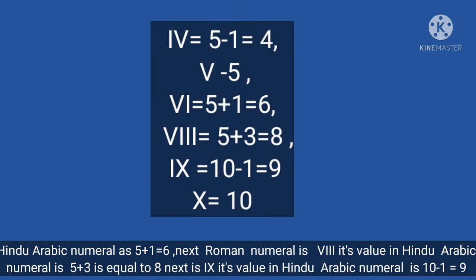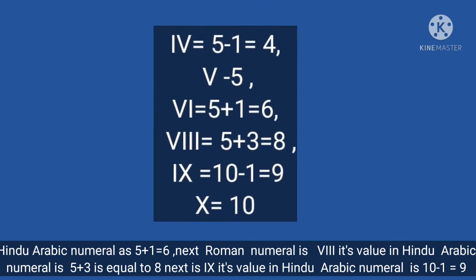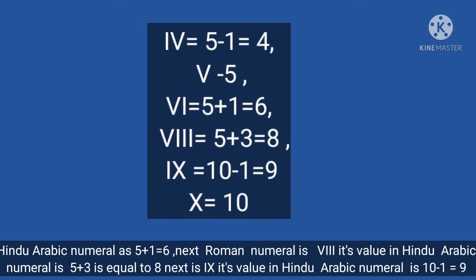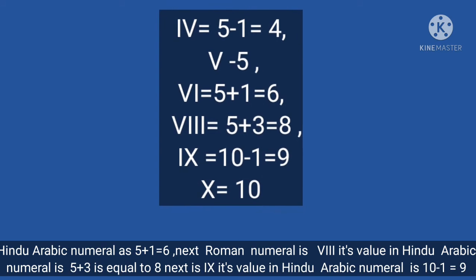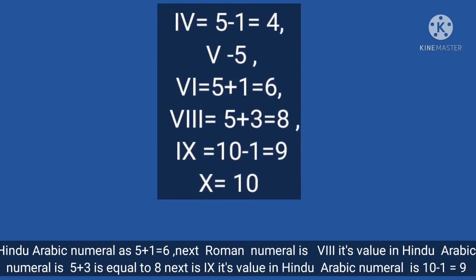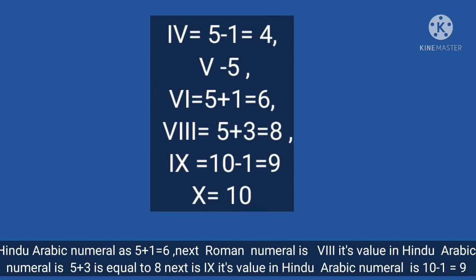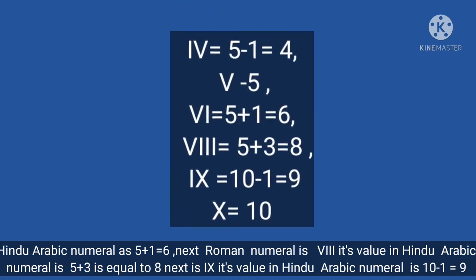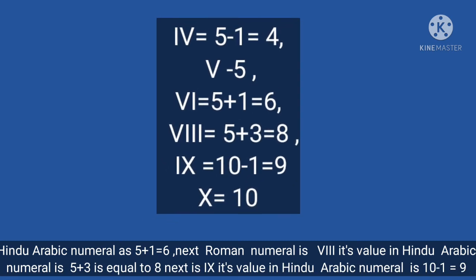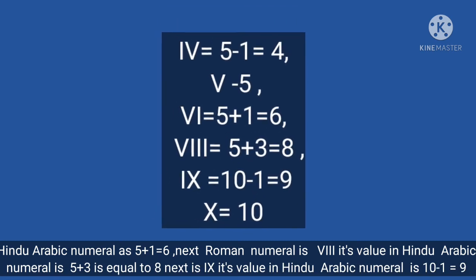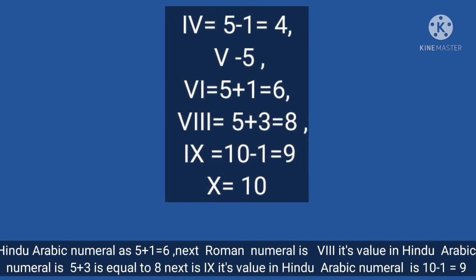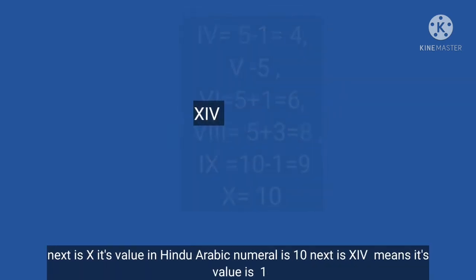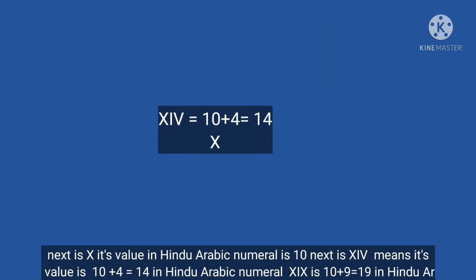Next Roman numeral is VIII. Its value in Hindu-Arabic numeral is 5 plus 3 equals 8. Next is IX, which means 9. Its value in Hindu-Arabic numeral is 10 minus 1 equals 9. Next is X, whose value in Hindu-Arabic numeral is 10. Next, XIV — its value is 10 plus 4 equals 14 in Hindu-Arabic numeral.